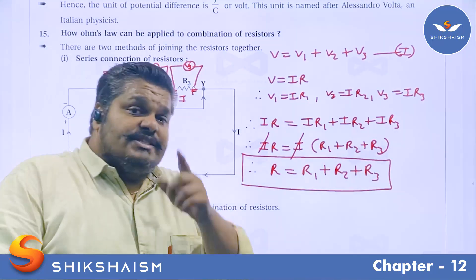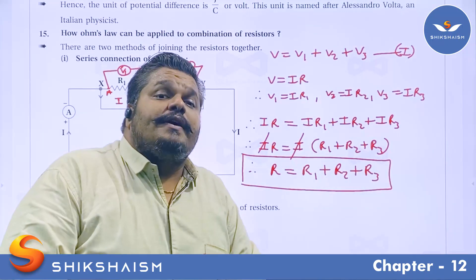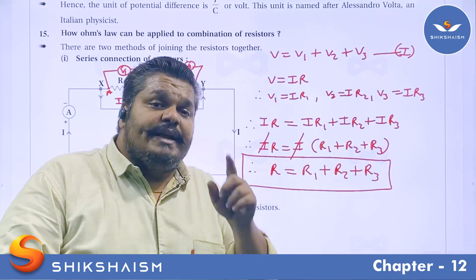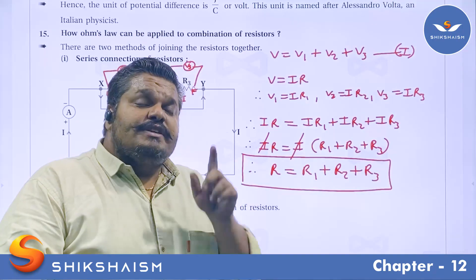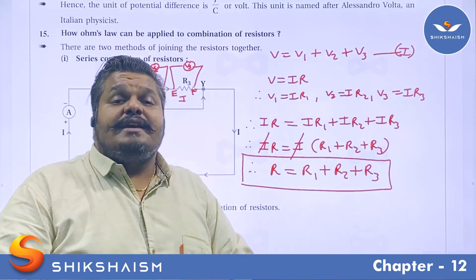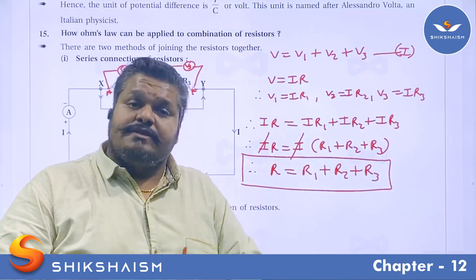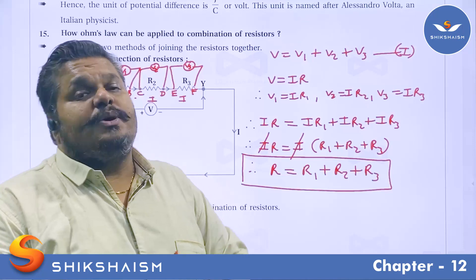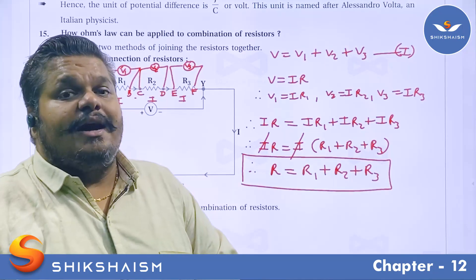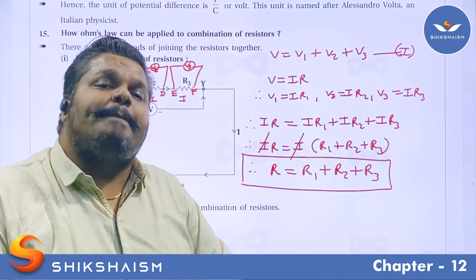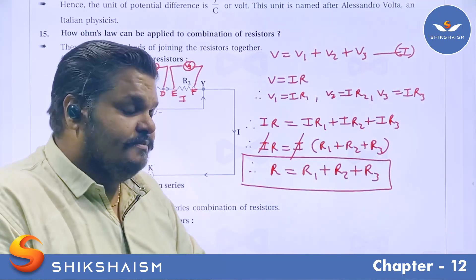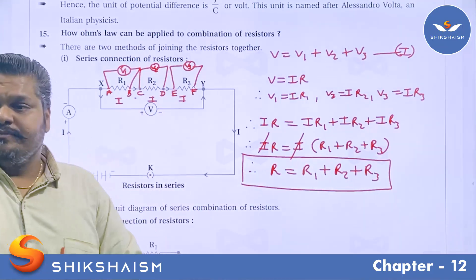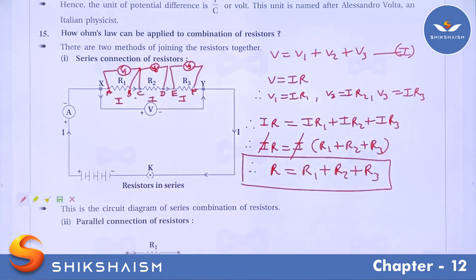Stay tuned for the next part on parallel connection, in which we will derive the equivalent resistance when three resistors R1, R2, and R3 are joined in a parallel connection.